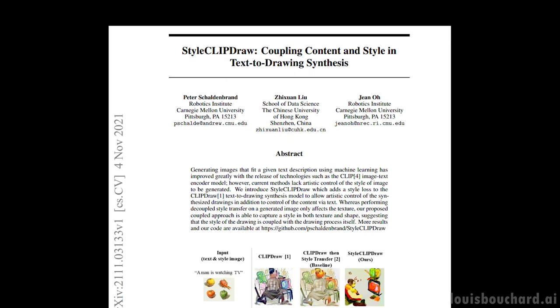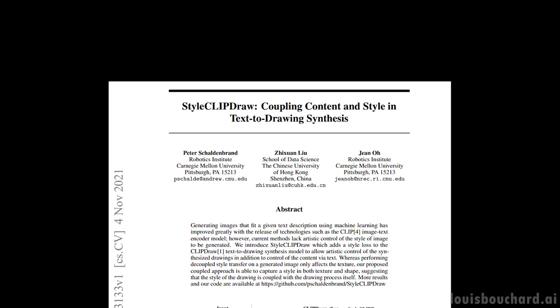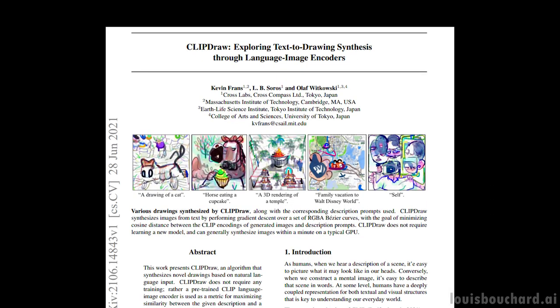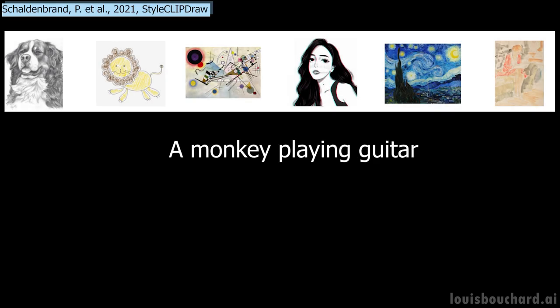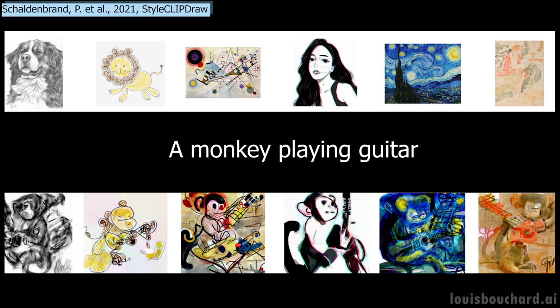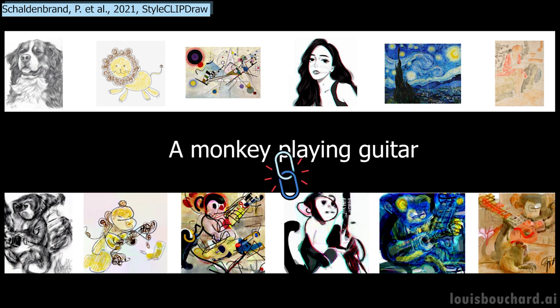As we said, this new model by Peter Schaldenbrun et al., called StyleClipDraw — which is an improvement upon ClipDraw by Kevin France et al. — takes an image and text as inputs and can generate a new image based on your text and following the style in the image. So the model has to both understand what's in the text and the image to correctly copy its style. As you may suspect, this is incredibly challenging. But we are fortunate enough to have a lot of researchers working on so many different challenges, like trying to link text with images, which is what CLIP can do.